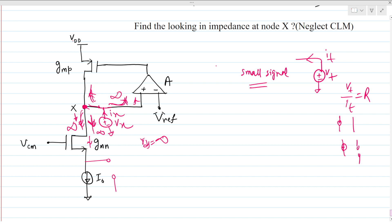So the two impedances — in the downward branch and at the op-amp input — are both infinite. When we apply Vx, the reference is deactivated so it is zero volts, and VDD is also short-circuited to ground. The voltage at the op-amp output is A times Vx. This MOSFET is a PMOS.